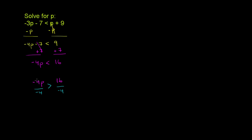Negative 4 divided by negative 4 cancels out. We have p is greater than 16 divided by negative 4, which is negative 4.